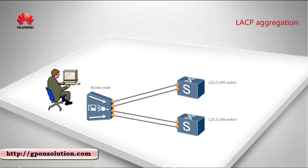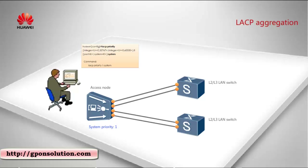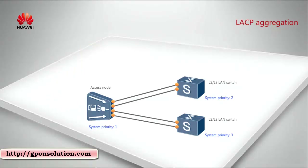Second, configure the system priority of the access device. Note that the system priority of the access device must be higher than the system priorities of the two upper layer devices. For example, if the system priority of the access device is set to 1, the system priorities of the upper layer devices should be 2 and 3, because a smaller value indicates a higher priority.